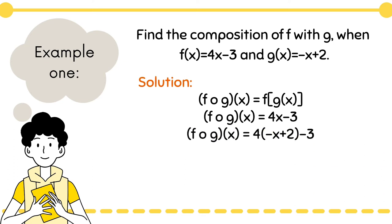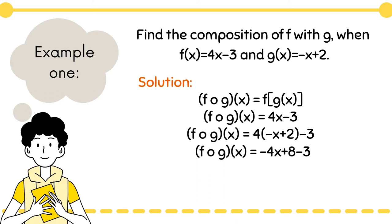Substitute the x with our independent function g(x), which is −x + 2, giving us 4 times (−x + 2) minus 3. Distribute 4 and we have −4x + 8 − 3. Lastly, we simplify and we arrive at the answer −4x + 5. Therefore, the composition of f with g is −4x + 5.